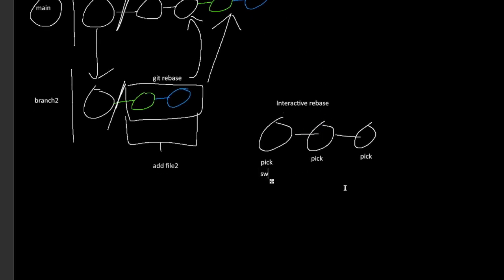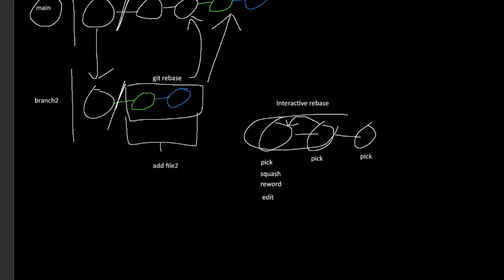There's also something called an interactive rebase — a very powerful tool that I think is underused. An interactive rebase allows you to go through all the commits from a certain point and customize options for each. By default it does a 'pick', which cherry-picks the commit onto the new branch. But you can also do 'squash', which combines a commit into the prior one; 'reword', which lets you change the commit message; and 'edit', which allows you to change the contents of the commit by restaging and adding new changes.